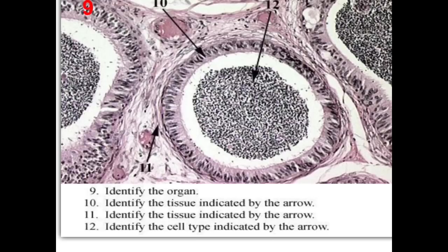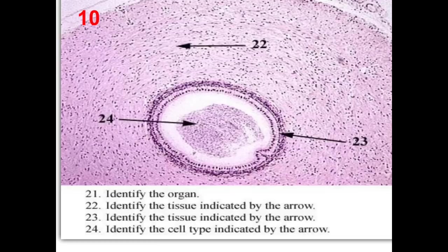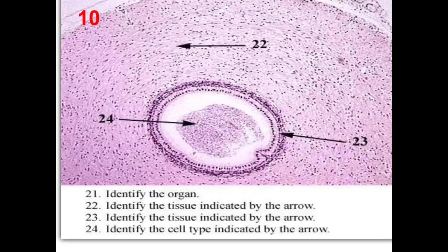Number 12: identify the cell type — sperms. Identify the organ: it is a hollow organ with pseudostratified columnar epithelium and a huge muscle layer surrounding the mucosa — this is the vas deferens. Identify the tissue indicated by the arrow (22) — musculosa layer. Identify the tissue (23) — pseudostratified columnar ciliated with non-motile cilia or stereocilia (present in the lower part; cilia disappear in the upper part). Identify the cell type (24) — sperms.